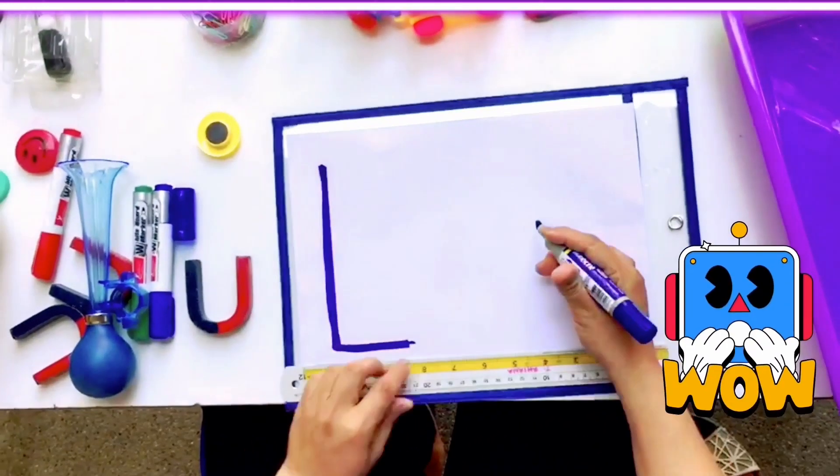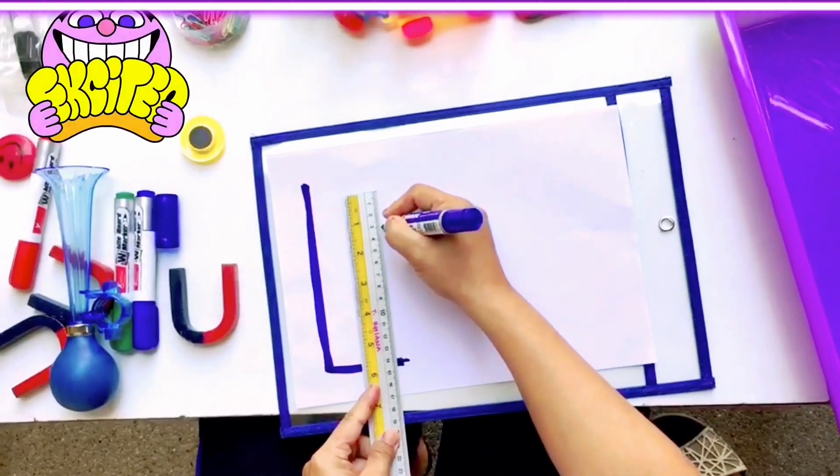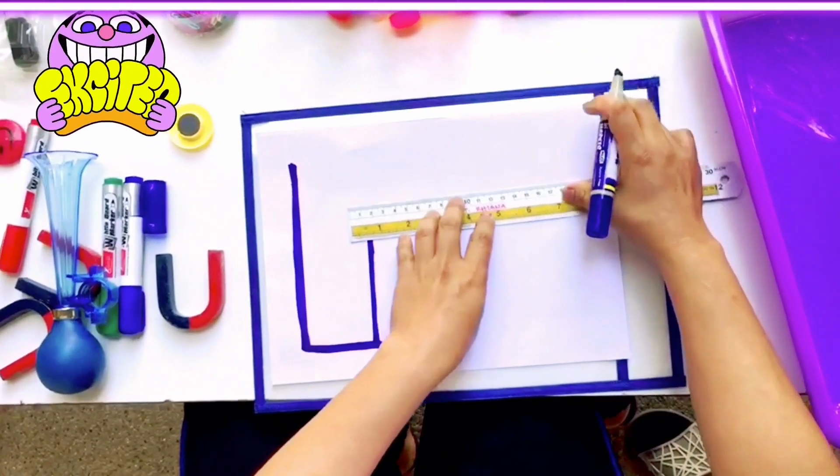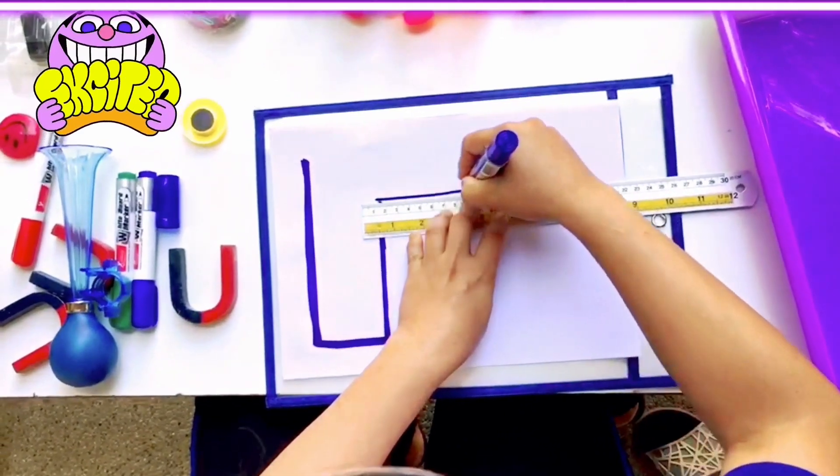Bigger is better. And this one we're going to make a small line. So what we're making is a race track. So we're going to play racing.